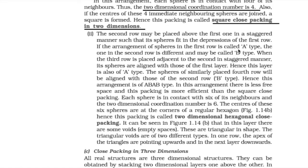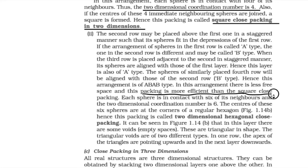If the arrangement of spheres in the first row is called A type, the one in the second row is different and may be called B type. When the third row is placed adjacent to the second in the staggered manner, its spheres are aligned with those of the first layer. Hence, this layer is also of A type. The spheres of the similarly placed fourth row will be aligned with those of the second row — B type. Hence, this arrangement is of A, B, A, B type. In this arrangement, there is less free space and this packing is more efficient than the square close packing.